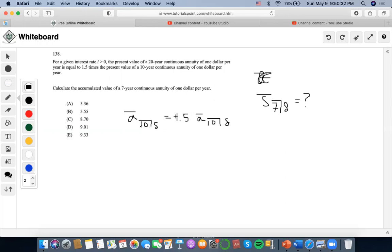So what I'm seeing here is that this would be denoted as 1 minus v to the 20, but v to the 20 would be converted to e to the negative 20 force of interest over force of interest equals to 1.5, 1 minus e to negative 10 over this amount.